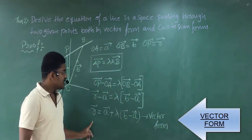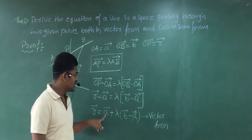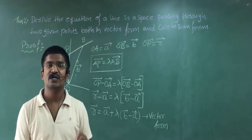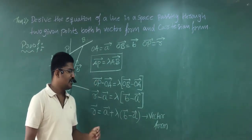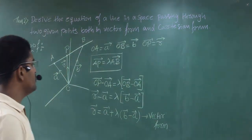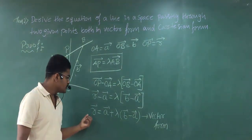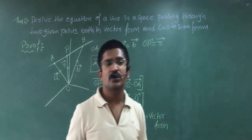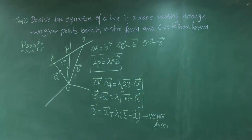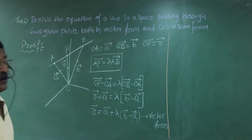Where OP is r, OA is a, and OB is b. Vector r is the position vector of point P, vector a is the position vector of point A, and vector b is the position vector of point B. Now we shall write all the terms in Cartesian form. Vector r is written as x·î plus y·ĵ plus z·k̂, vector a as x₁·î plus y₁·ĵ plus z₁·k̂, and vector b as x₂·î plus y₂·ĵ plus z₂·k̂.